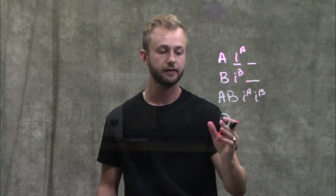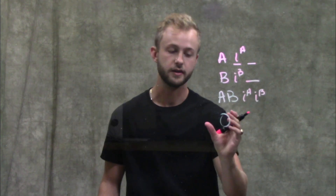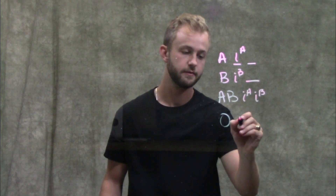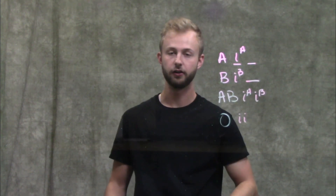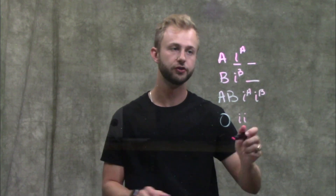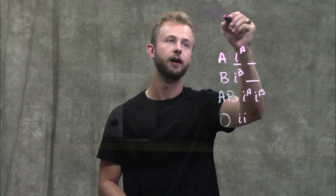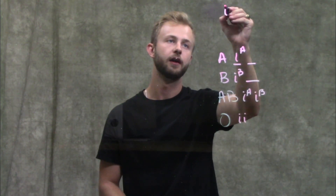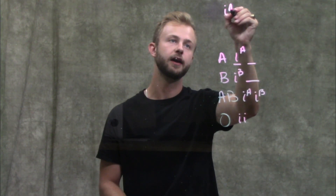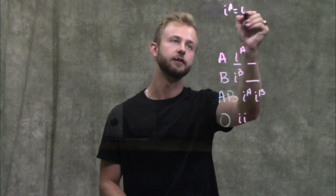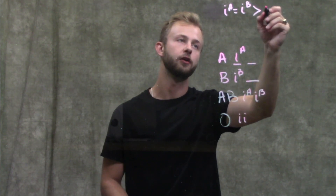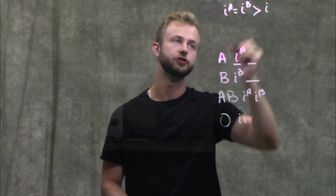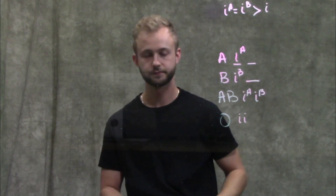Finally, for the O blood type, they would have to have two little I's. So just remember: IA is co-dominant to IB, and both of them are dominant to just I.